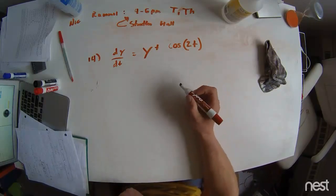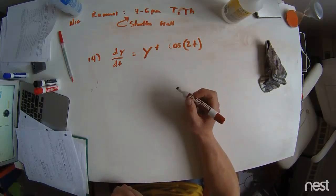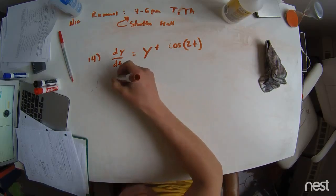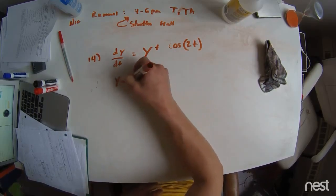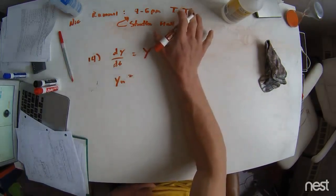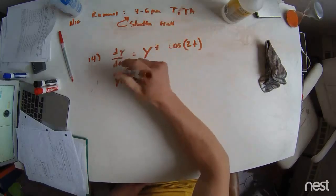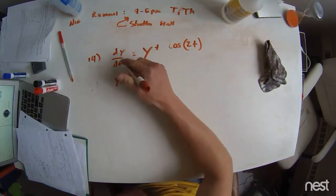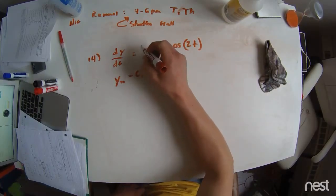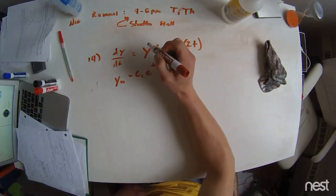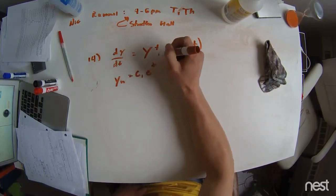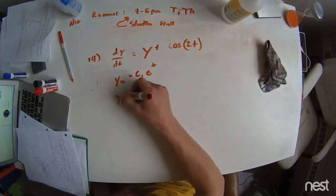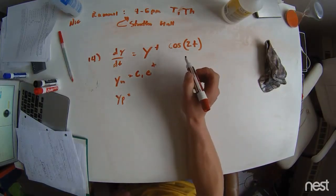Today we're going to be solving problem 14 in this video. This is a problem of undetermined coefficients. The first step is to find the homogeneous solution — take away the function of t. We see that e to the t is the solution for this, because there's no coefficient out front of y. That's the function that solves the homogeneous case. We look at our particular case and notice that there's a cosine.